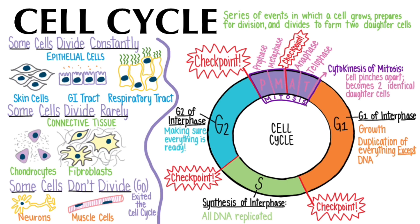Although there are many names and sub-phases to the cell cycle, start by always remembering that it really only has two parts: interphase, which includes G1, S, and G2, and mitosis, which includes PMAT and cytokinesis. In my next video, I'll go through the different phases of mitosis. Now, spend a few minutes reviewing this information, make sure you understand it reasonably well, and then use my Quizlet flashcards to practice and review. See you in the next video!